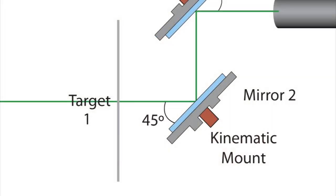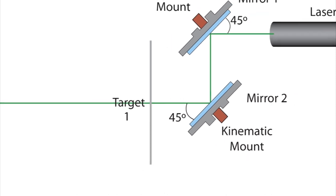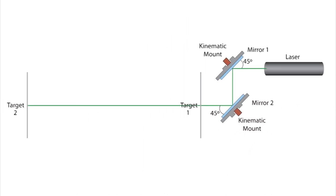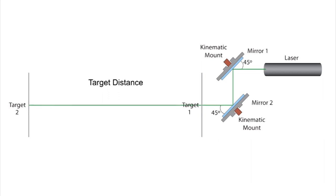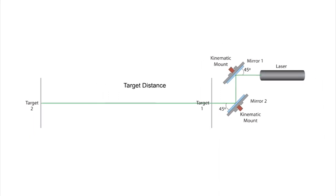Since the placement of the target dictates the path of the beam, a target should strategically be placed near the exit of the mirror with the other point of reference farther away. Any distance is fine, but the farther away the target is, the more precise the alignment will be.